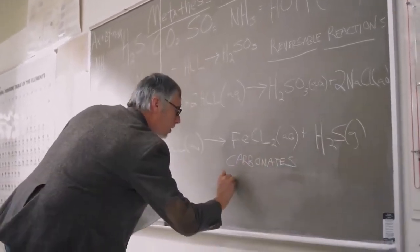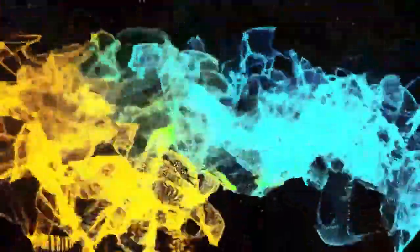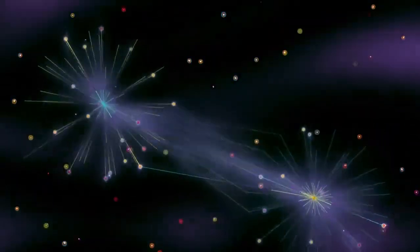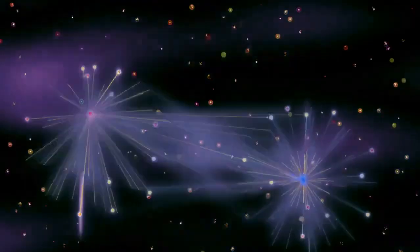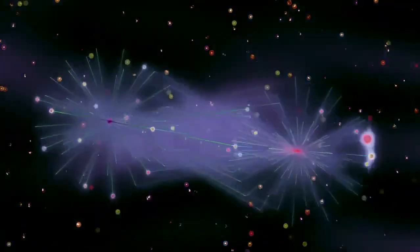Then there's the Higgs field, which Tong compares to molasses spread throughout the universe. The Higgs field gives mass to other particles, stopping them from moving at the speed of light. Tong notes that this comparison is not perfect because it suggests friction, while in reality, different particles interact with the Higgs field in various ways.